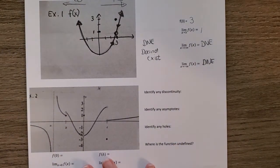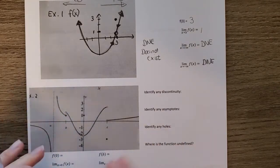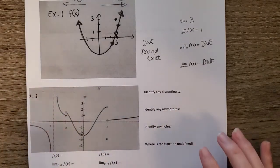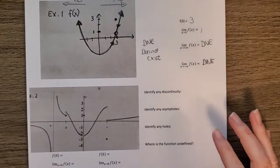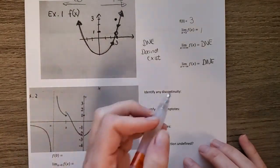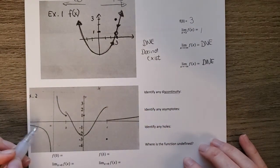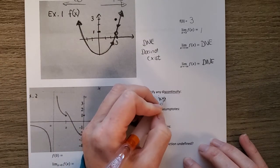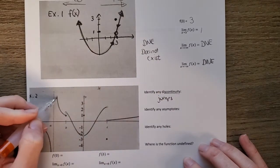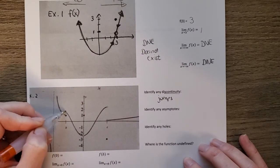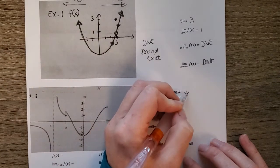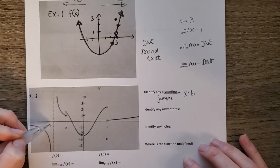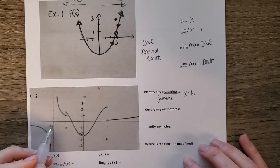Example two has a much more complicated graph with curves, holes, and jumps. We identify key terms: discontinuity means the graph is moving along and then jumps. A discontinuity happens at x equals b and again at x equals c.